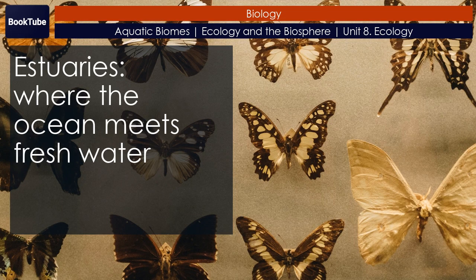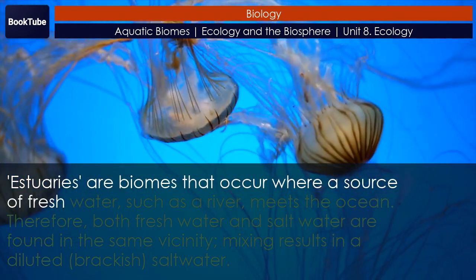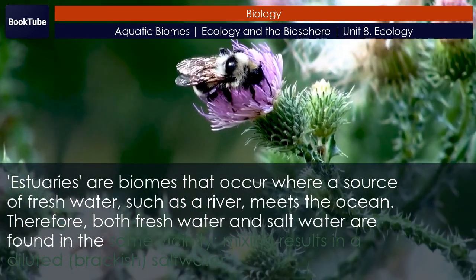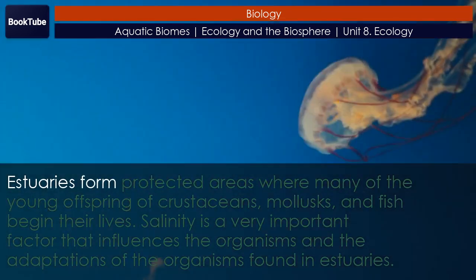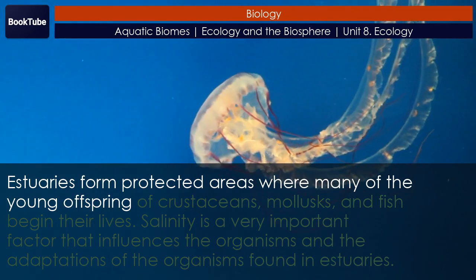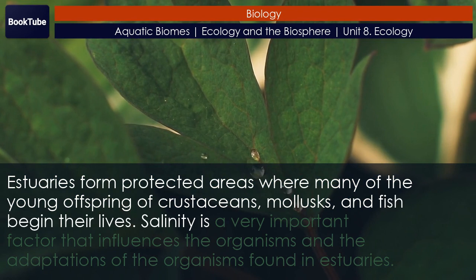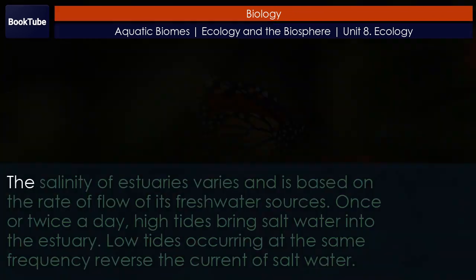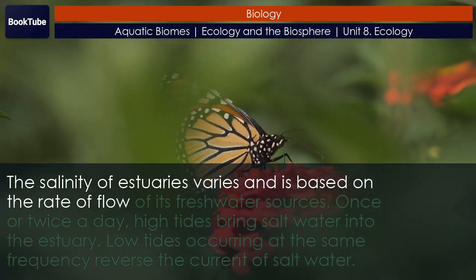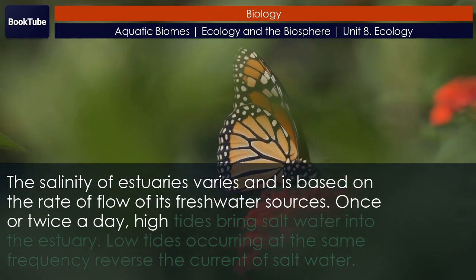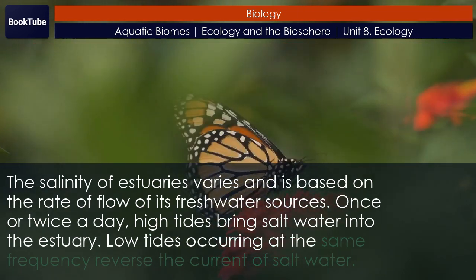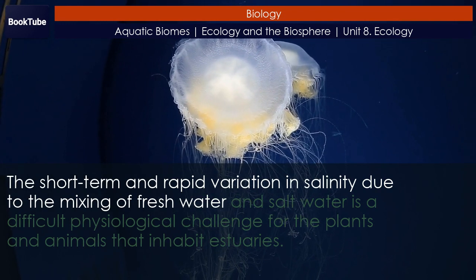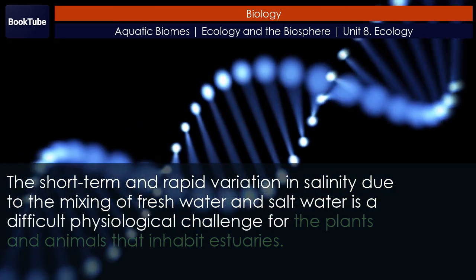Estuaries — where the ocean meets fresh water — are biomes that occur where a source of fresh water such as a river meets the ocean. Both fresh water and salt water are found in the same vicinity, and mixing results in a diluted brackish salt water. Estuaries form protected areas where many of the young offspring of crustaceans, molluscs, and fish begin their lives. Salinity is a very important factor that influences the organisms and their adaptations in estuaries. The salinity of estuaries varies based on the rate of flow of its freshwater sources. Once or twice a day, high tides bring salt water into the estuary; low tides reverse the current of salt water. This short-term and rapid variation in salinity due to the mixing of fresh water and salt water is a difficult physiological challenge for the plants and animals that inhabit estuaries.